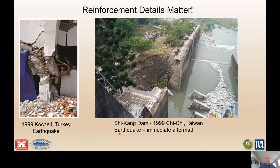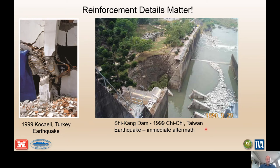Reinforcement detailing matters — here are some pictures to illustrate that. This is a column in Turkey from the Kocaeli earthquake in 1999, showing insufficient confining reinforcement — it looks like wire was wrapped around the primary column reinforcement. This is a concrete retaining wall failure at Shikon Dam in Taiwan during the 1999 Chi Chi earthquake — a failure of a counterfort retaining wall. Looking closely at the picture, it's hard to see any reinforcement pullout or breakage, which calls into question some of the detailing for that structure.